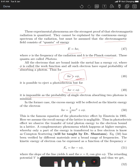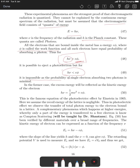Once the electron comes out, it will have kinetic energy proportional to the incident energy minus the threshold cutoff. The total incident energy equals kinetic energy plus the potential energy — which is the binding energy, e times the work function φ. This is the famous photoelectric equation by Einstein in 1905, for which he received the Nobel Prize.